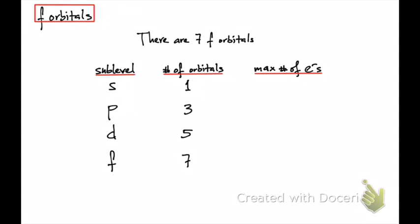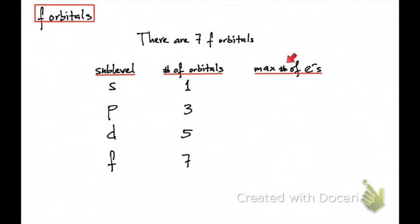Here's a summary: you have the sublevels — S, P, D, and F. The S sublevel has one orbital, P has a maximum of three, D has five, and F has seven. In terms of maximum number of electrons: an S sublevel can hold a maximum of 2 electrons, P holds 6, D holds 10, and the F sublevel holds 14 electrons.